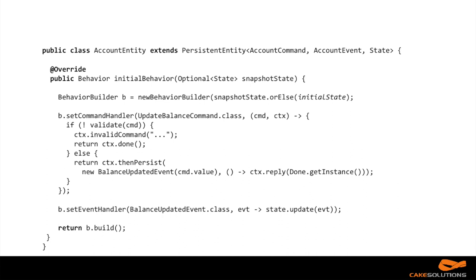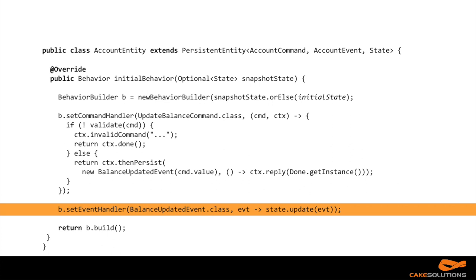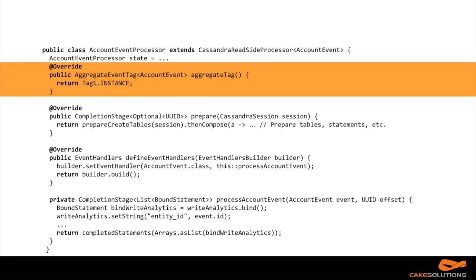There's another interesting use case in Lagom, which is Lightbend's latest product. In Lagom there's a concept of a persistent entity, which is very similar to a persistent actor. You define how you handle commands, then how you handle events — very similar to the event-sourced persistent actor. The interesting part I wanted to show is on the read side: the Cassandra read side processor uses the eventsByTag query. You subscribe to a tag you're interested in — in this case, tag one — so every time the stream produces a new event with that particular tag, you will be updated.